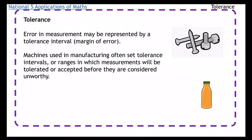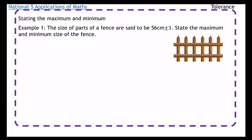That is essentially what the tolerance is - what is acceptable, between what two values. So with that in mind, if I tell you the size of parts of a fence are said to be 56 centimeters plus or minus 3, state the maximum and minimum value.